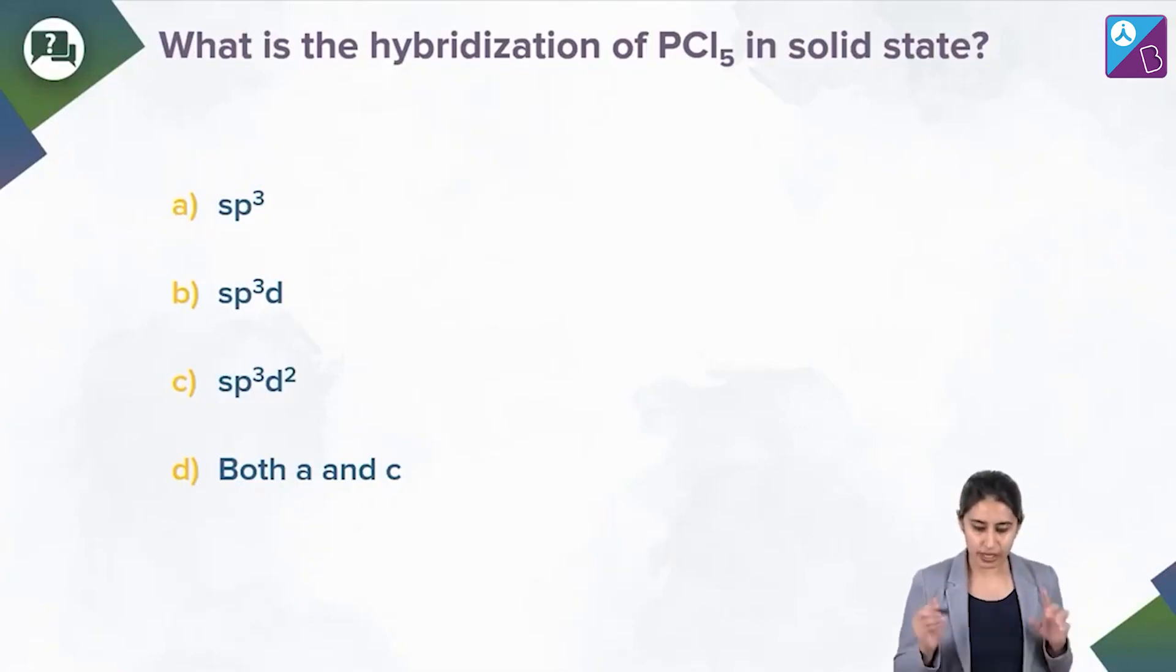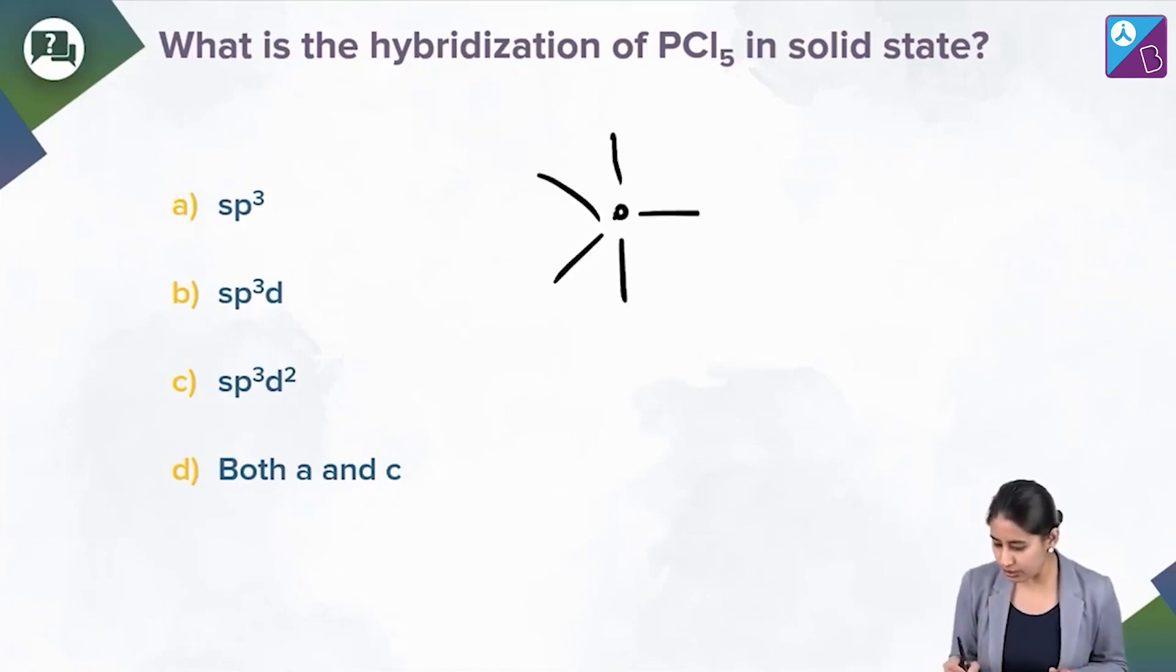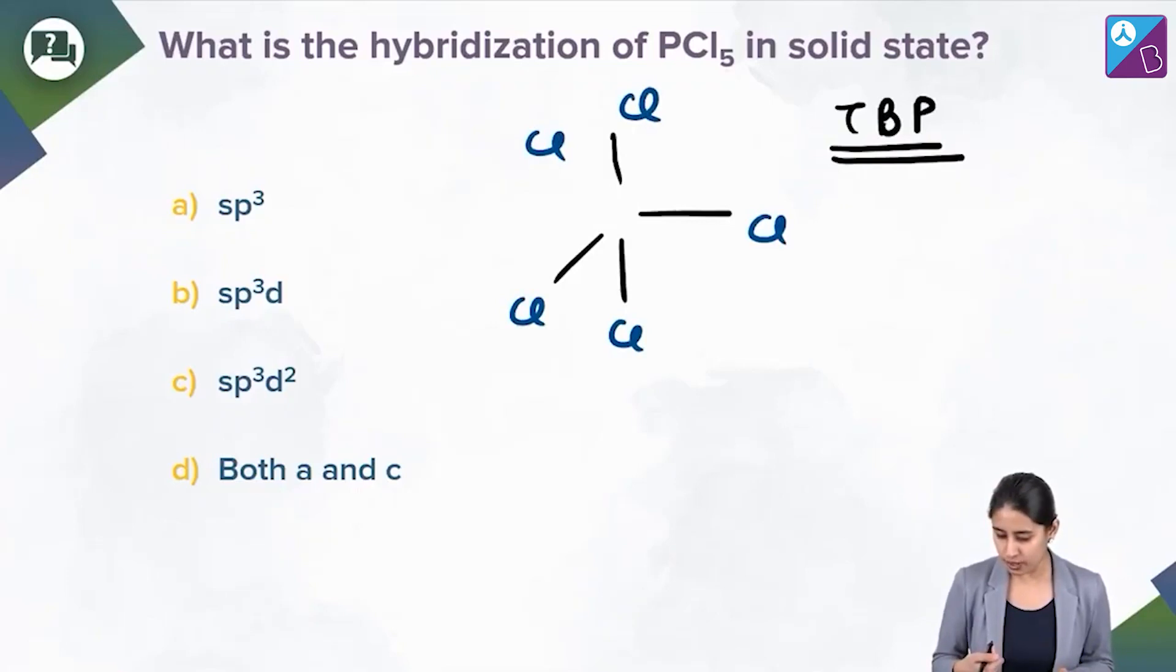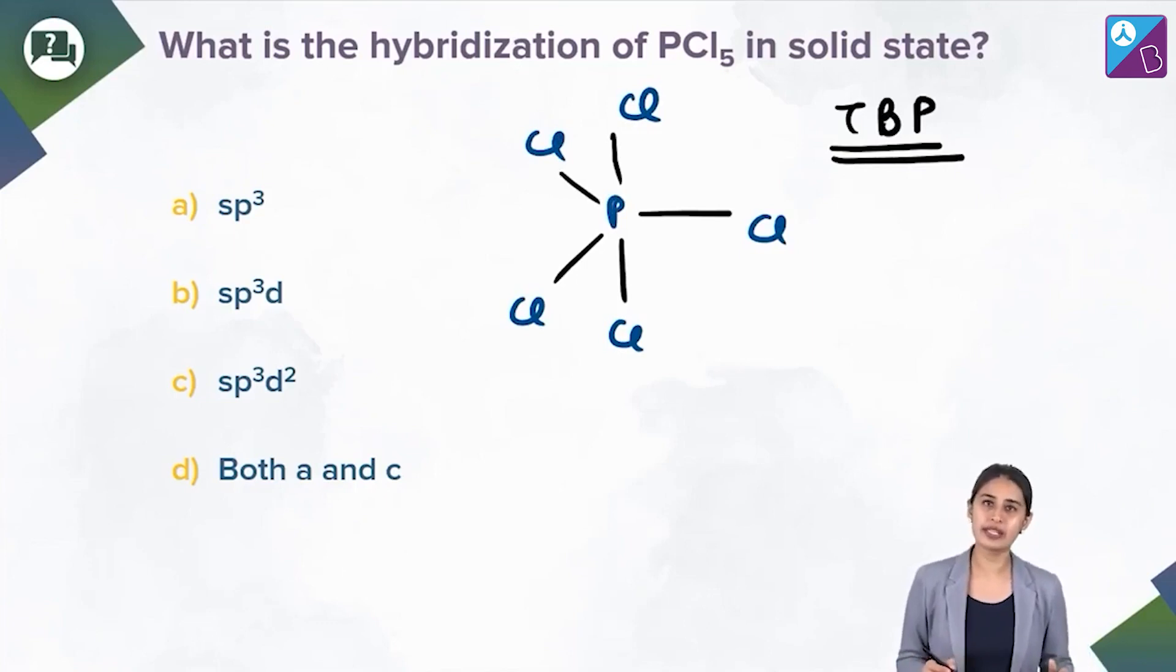So be careful. PCl5, normally nothing mentioned, then we know is TBP, trigonal bipyramidal geometry. You know that side atoms are five, central atom is phosphorus, you know every story about TBP. Now axial equatorial breaks into PCl3 plus Cl2. PCl3 plus Cl2, the Cl2 is coming from axial. This kind of story is something that you know already.